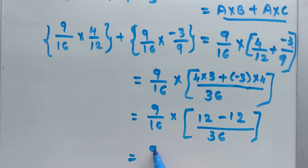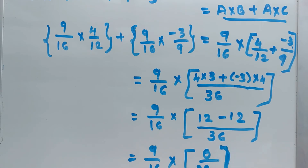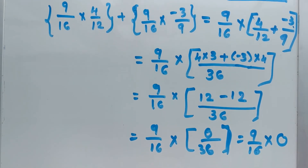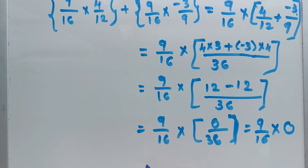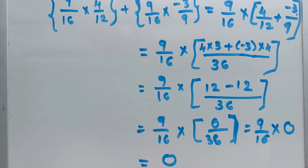We get 9 over 16 multiplied by 0 divided by 36, which simplifies to 9 over 16 multiplied by 0. Anything multiplied by 0 is 0, so the answer is 0.